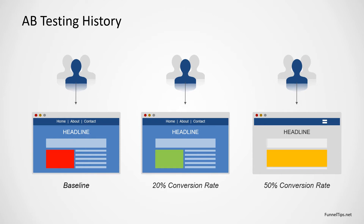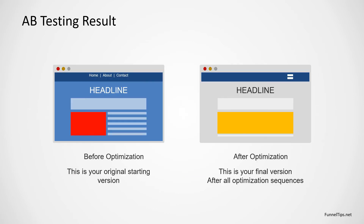Remember with A-B testing: you start with a baseline and you only tweak one thing at a time. If you tweak more than one thing, you don't actually know what was creating the benefit or the negative effect. Just test one thing at a time and continue to test until you're satisfied with the level of output from your marketing efforts. Look out for my next video where I'll show you how to easily implement a landing page and create A-B split testing with some easy-to-use software. Don't forget to like and subscribe — see you soon on the channel.